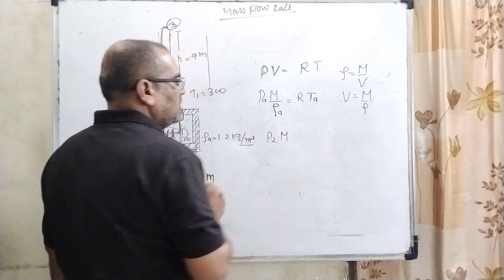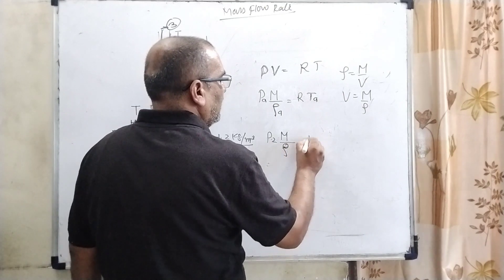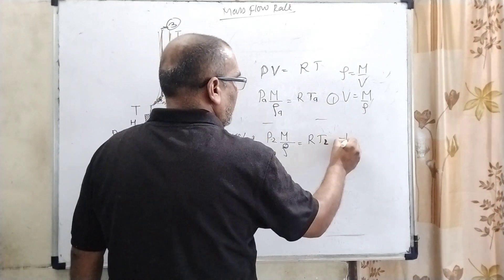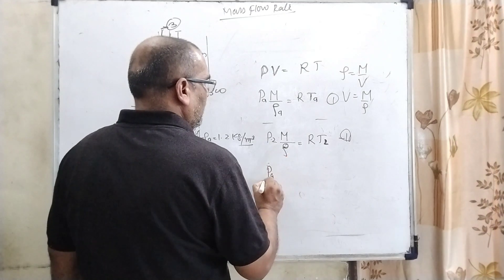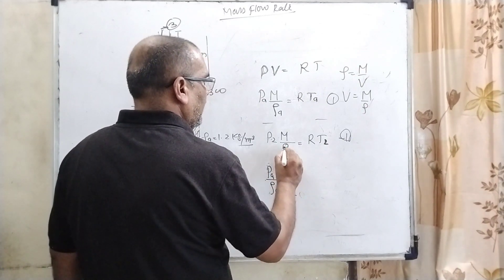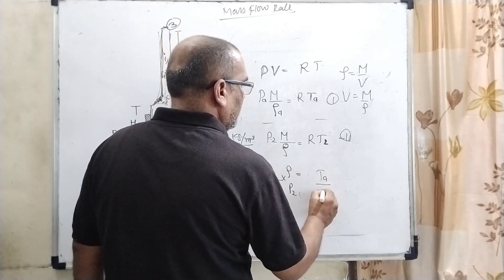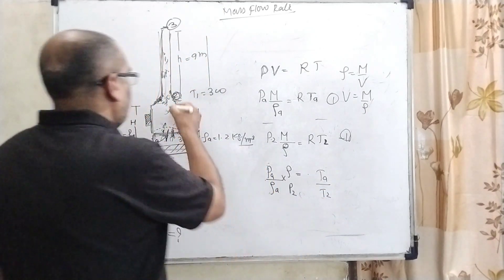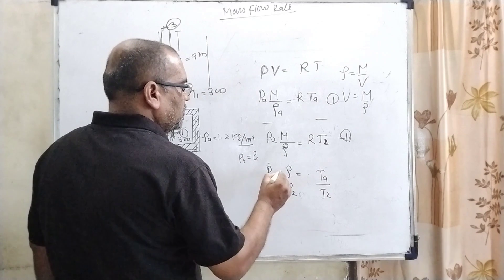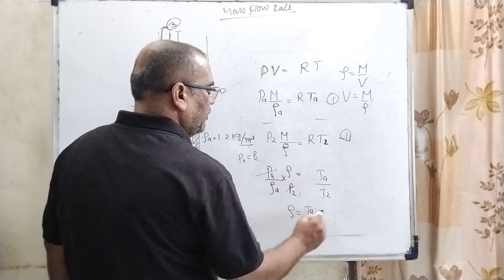Now for the second condition, point 2: M according to conservation of mass, the mass is conserved, so M is not changed. Here the density which we have to find out, R is constant, and temperature is T_2. Divide equation 1 by equation 2. Then P_A over rho_A equals P_2 over rho, because M cancels out and R cancels. That gives T_A over T_2.